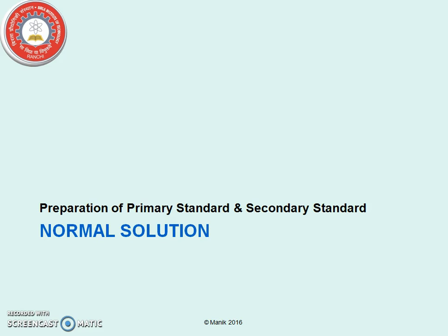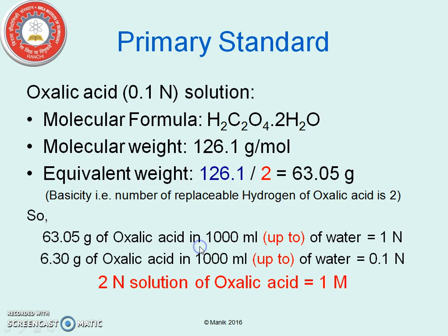Normal solution preparation. Taking the same example of oxalic acid as the primary standard, we prepare a 0.1 normal solution. The molecular weight is 126.1 and the equivalent weight is 126.1 ÷ 2 = 63.05, because the basicity of oxalic acid is 2 — basicity being the number of replaceable hydrogen atoms. Therefore, 63.05 g of oxalic acid in 1000 ml gives 1 normal solution, and 6.3 g in 1000 ml gives 0.1 normal solution. From these values, 2 normal oxalic acid equals 1 molar oxalic acid.